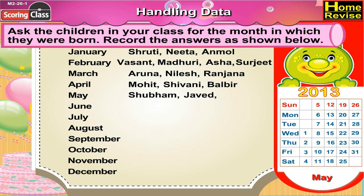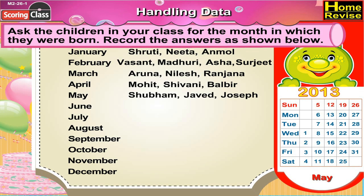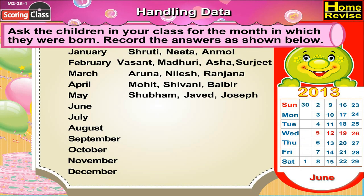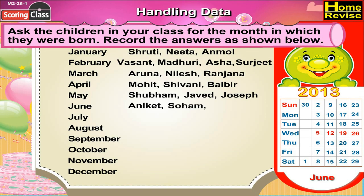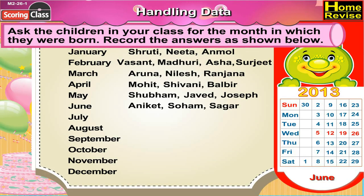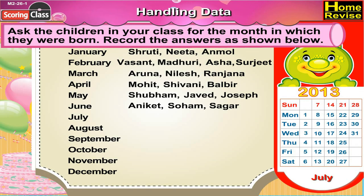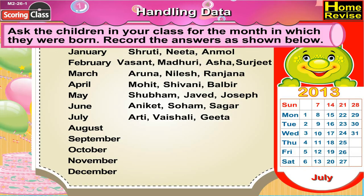In May, Shubham, Javed and Joseph have their birthday. In June, Aniket, Soham and Sagar have their birthdays. In July, Aati, Vaishali and Gita have their birthday.